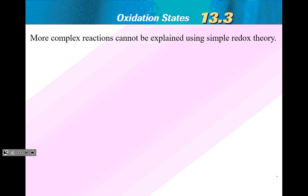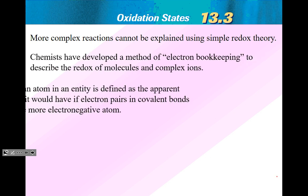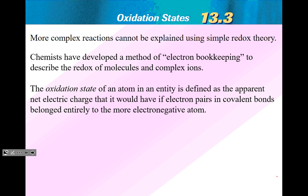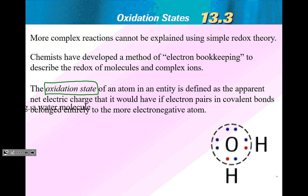Let's quickly take a look at the definition. The oxidation state of an atom in an entity is defined as the apparent net electric charge that it would have if electron pairs in covalent bonds belonged entirely to the more electronegative atom. What does that mean?